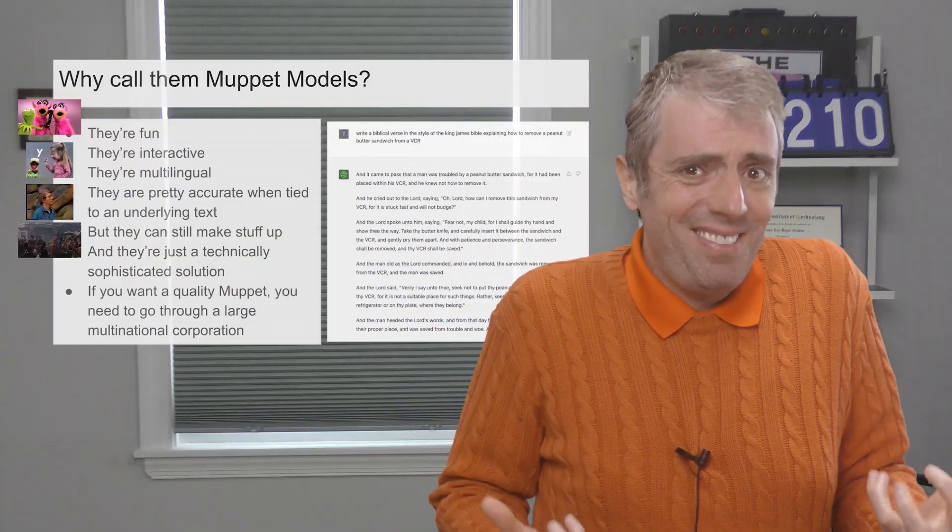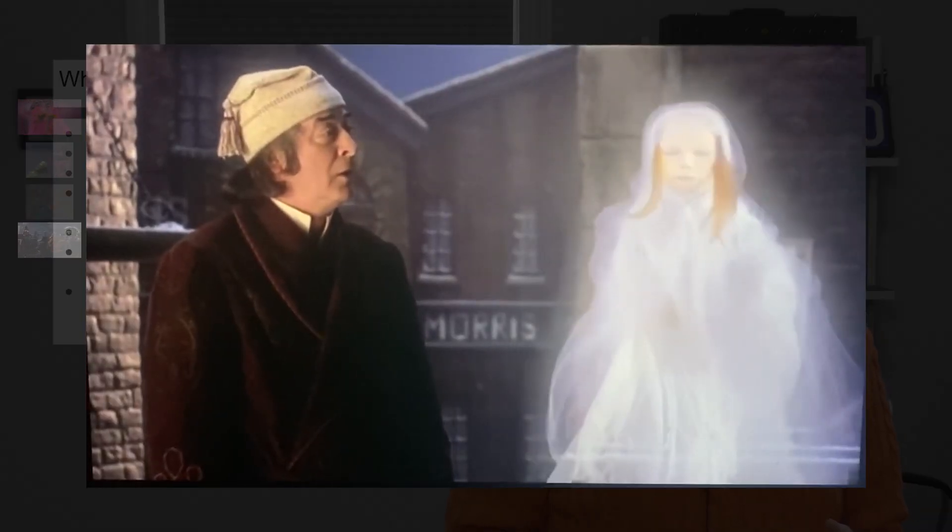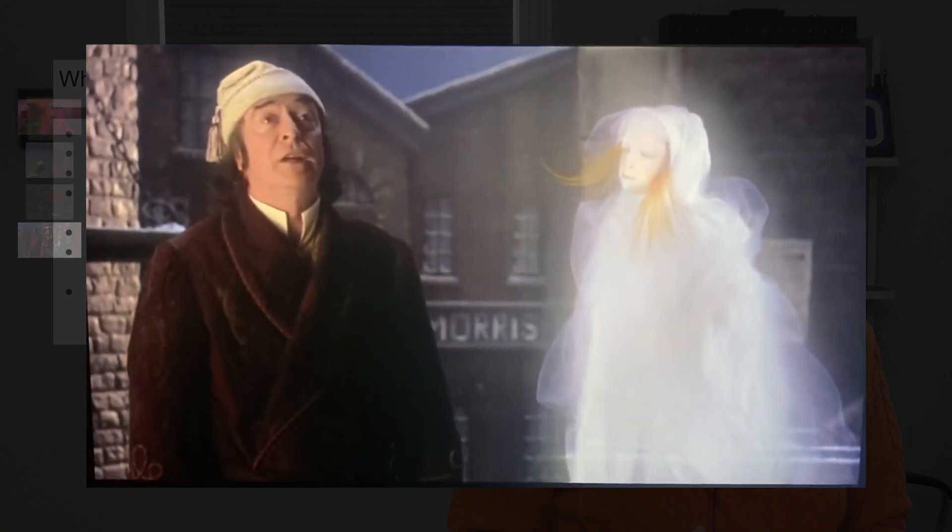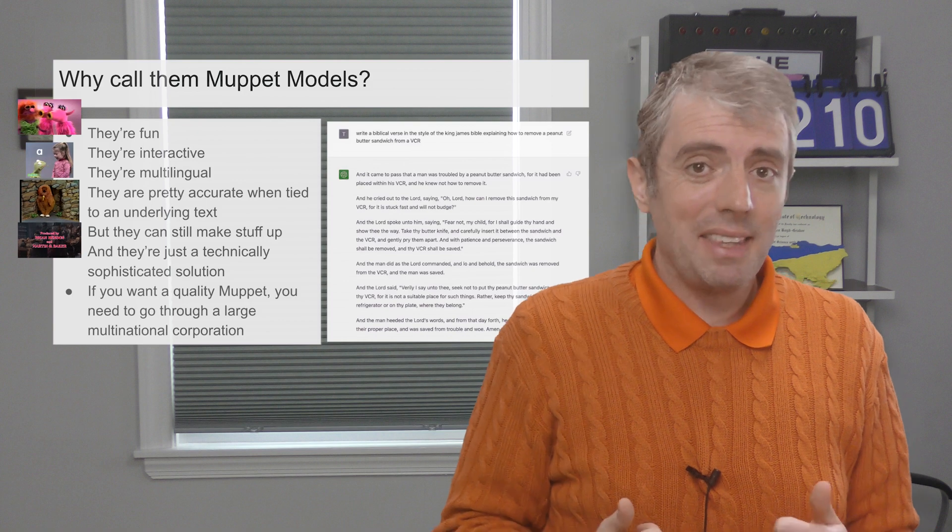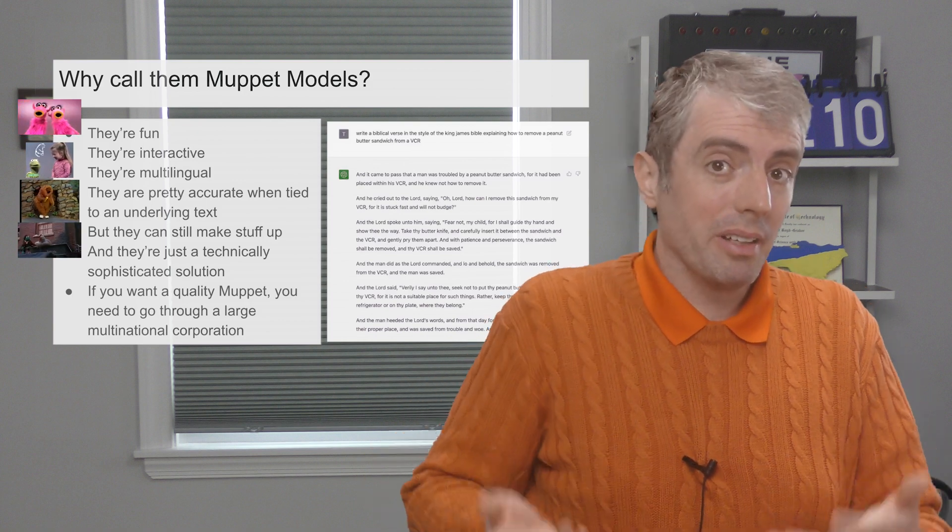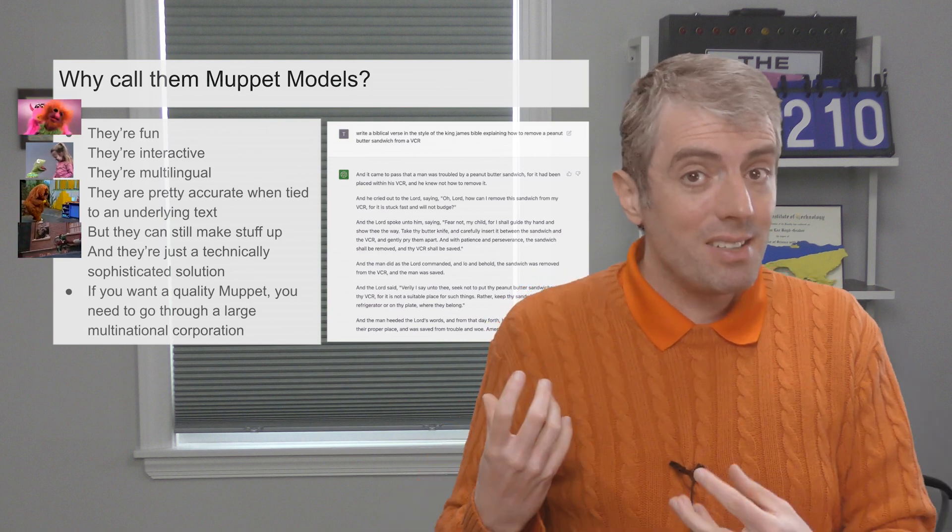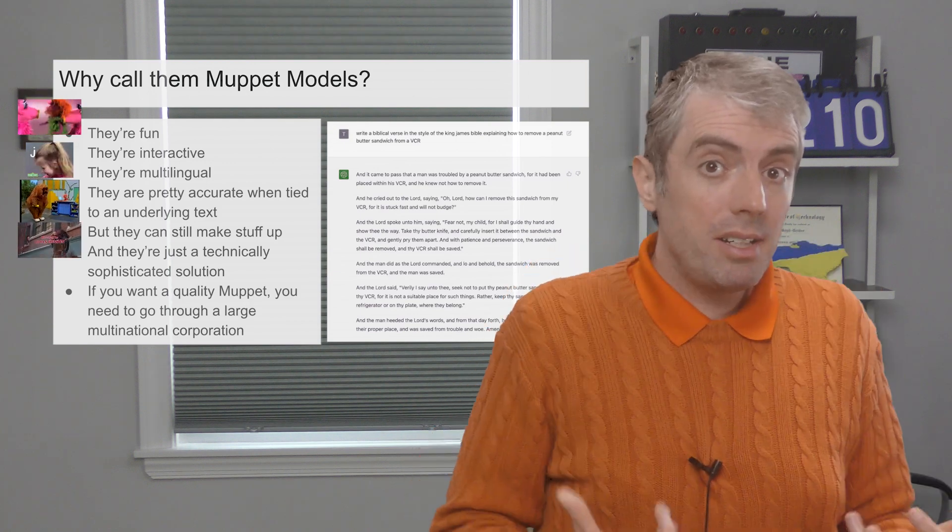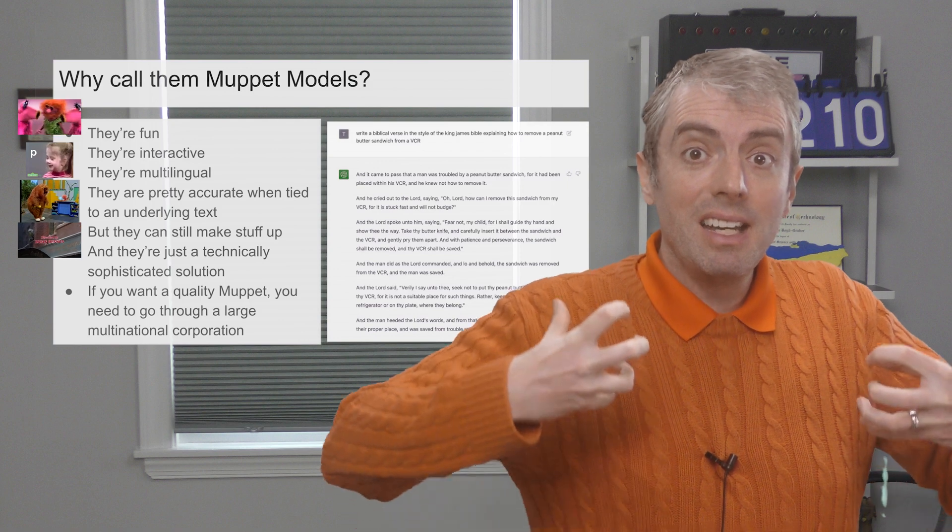However, Muppets are not infallible. They can still make stuff up. Do you know this place? Know it? My first job was here. This is Fuzzy Wig's old rubber chicken factory. Believe it or not, Dickens didn't actually write that line. And while it might be obvious if you know the underlying text well, there's not much about the presentation here that would tell you that this is something made up. But one thing that I really appreciate about Muppets is that they're a really technically sophisticated illusion.